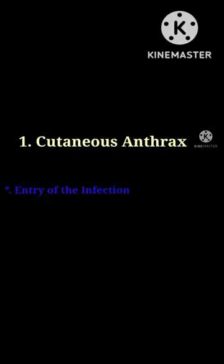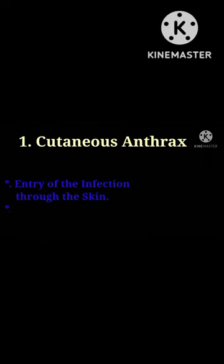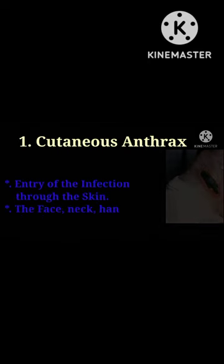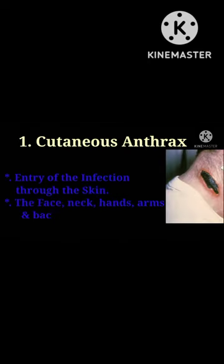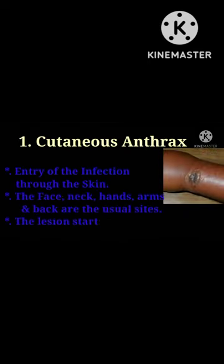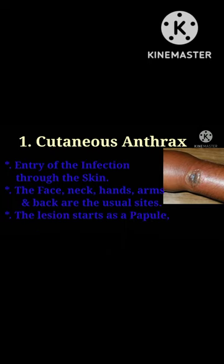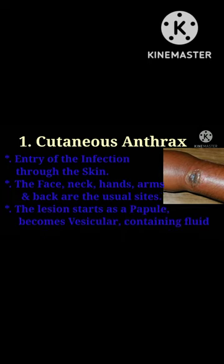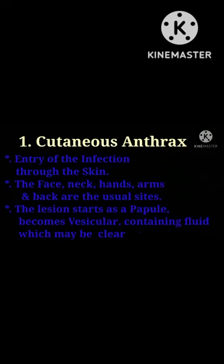Cutaneous anthrax follows entry of the infection through the skin. The face, neck, hands, arms, and back are the usual sites.